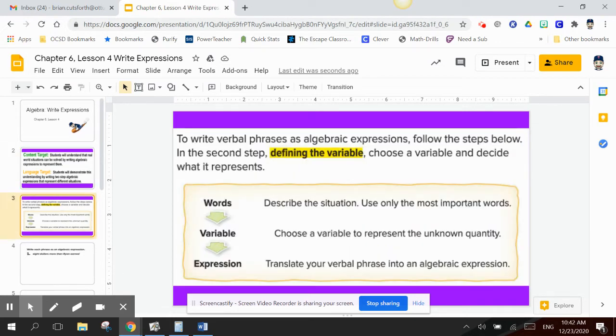To write verbal phrases as algebraic expressions, follow the steps below. In the second step, defining the variable, choose a variable and decide what it represents.